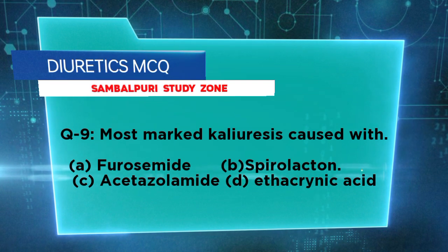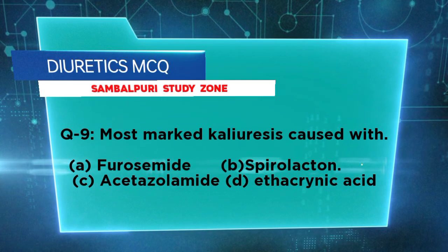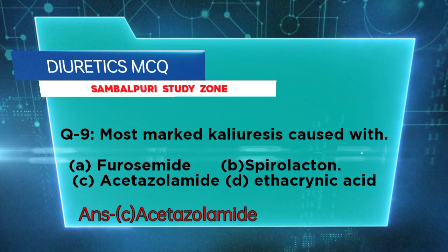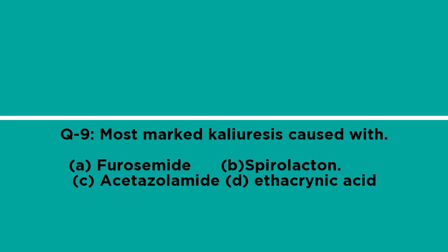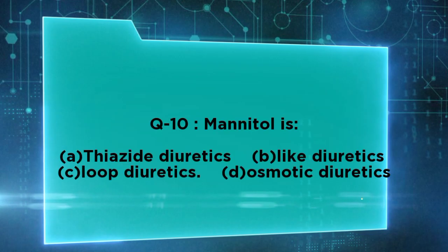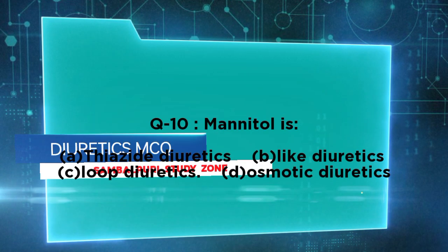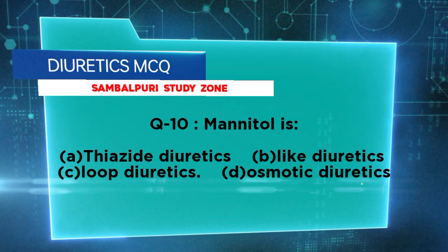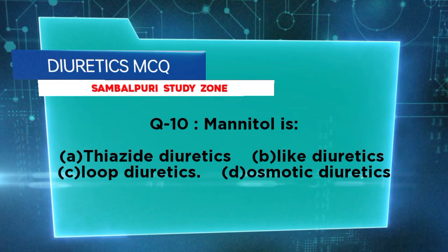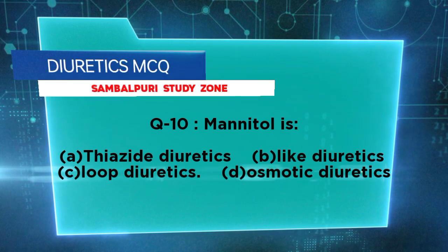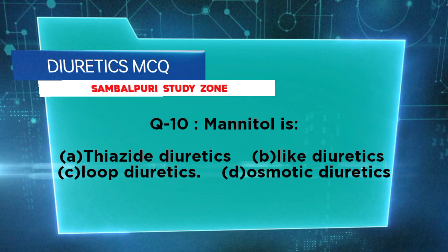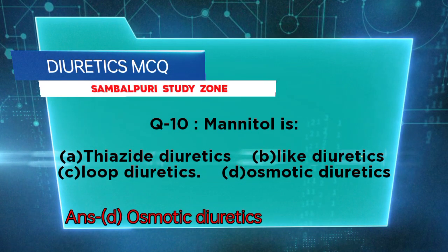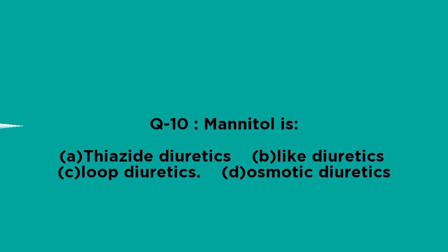...acetazolamide, or ethacrynic acid? Right answer: acetazolamide. Mannitol is classified as: thiazide diuretics, loop diuretics, or osmotic diuretics? Right answer: osmotic diuretics.